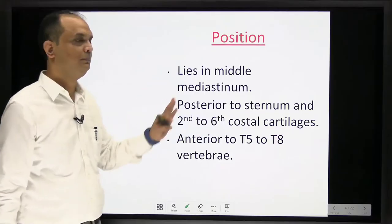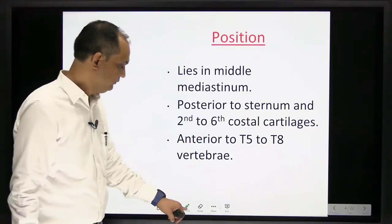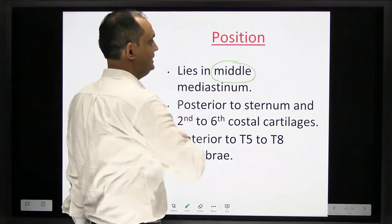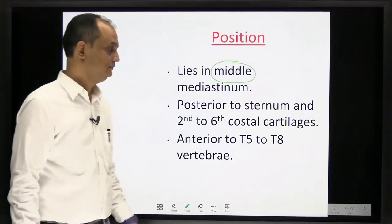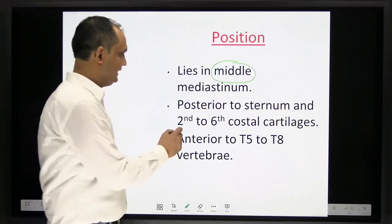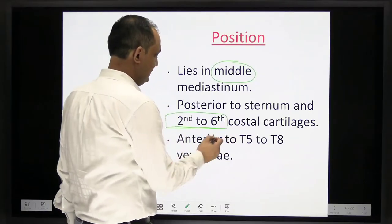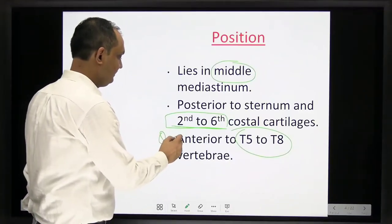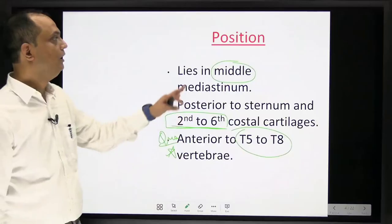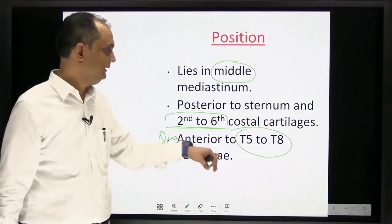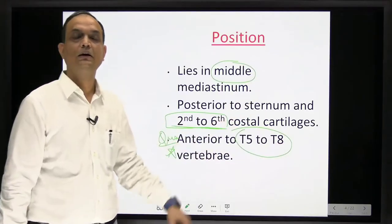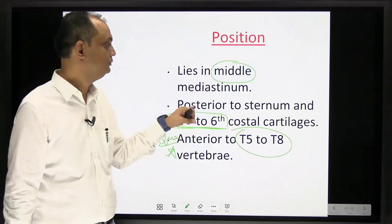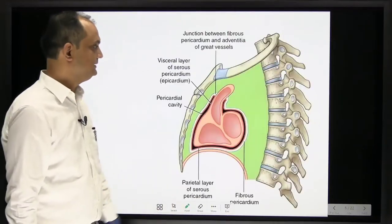The position of the pericardium: it lies in the middle mediastinum, posterior to the sternum and the second to sixth costal cartilage, and anterior to the T5 to T8 vertebrae. This is an important exam question — the vertebral level of the pericardium is T5 to T8, and it relates to the second to sixth costal cartilage anteriorly.